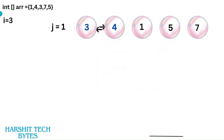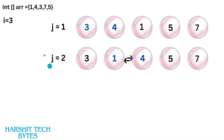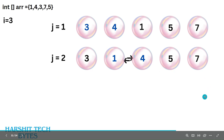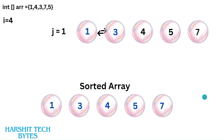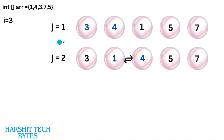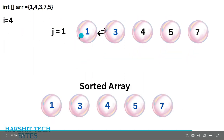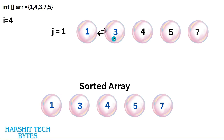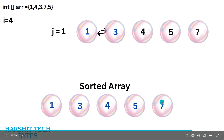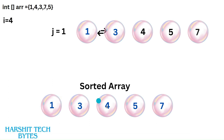When i becomes 3, we swap 3 with 4 and 4 with 1. In this step we perform only 2 iterations because 5, 7, and 4 are already placed in their correct order, so we don't need to compare them — that's why we subtract 1 from n each time. When i becomes 4 and j is 1, we compare the adjacent elements and swap, and after the next iteration our array is sorted in ascending order.